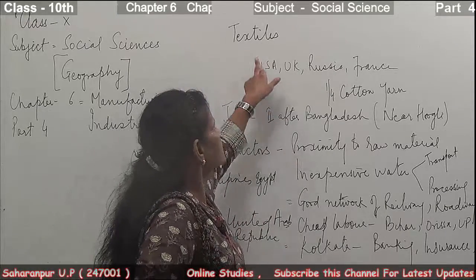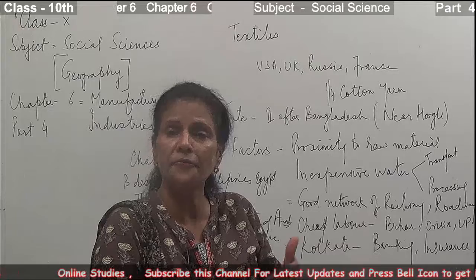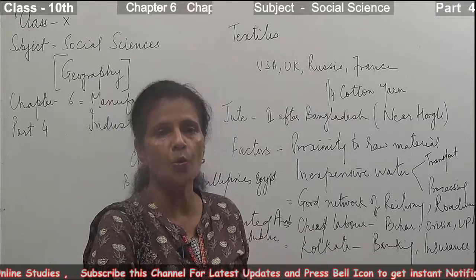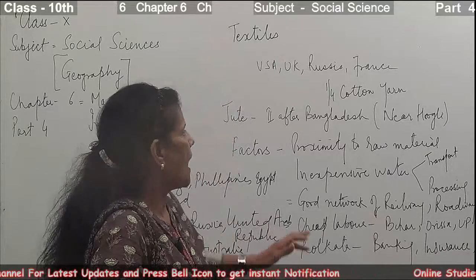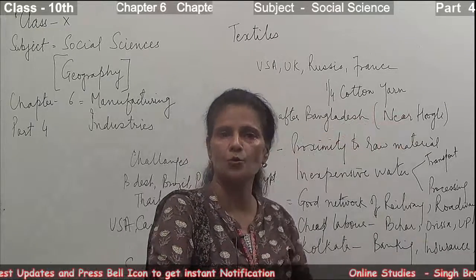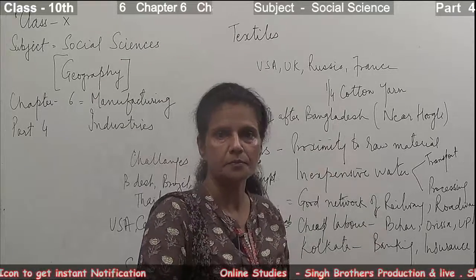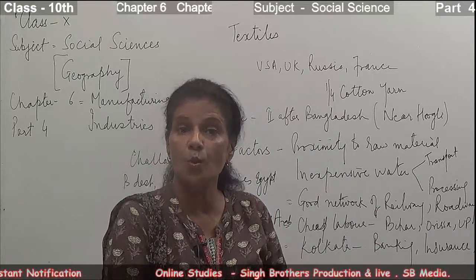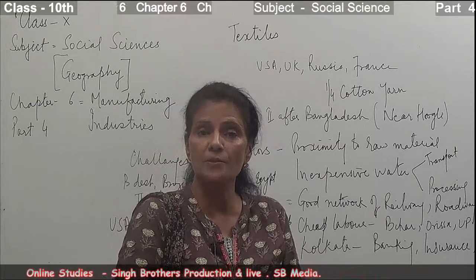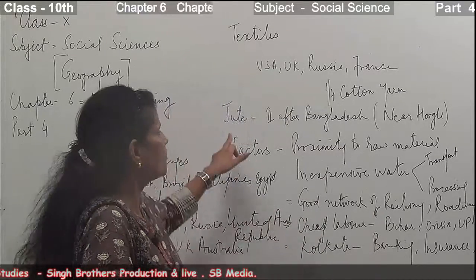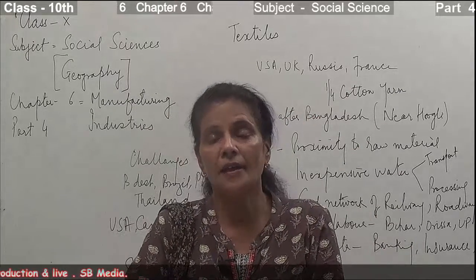India is very famous for exporting its cotton to USA, UK, Russia, and France. One-fourth of the total foreign trade of India accounts for cotton yarn. India is known for raw cotton and has been the original place of cotton in the world, so we are ahead in production and export.